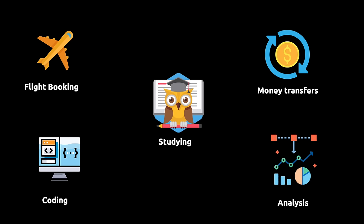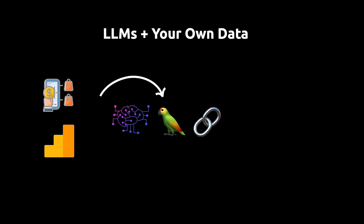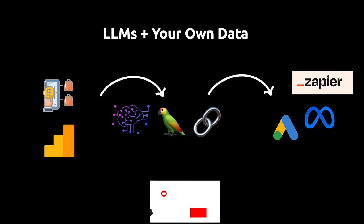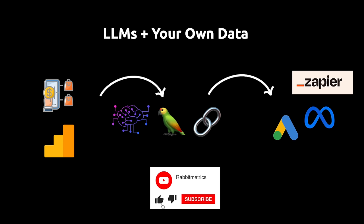Coding, data analysis, data science — it's all going to be affected by this. One of the applications I'm most excited about is the ability to connect large language models to existing company data such as customer data, marketing data, and so on. I think we're going to see exponential progress in data analytics and data science. Our ability to connect large language models to advanced APIs such as Meta's API or Google's API is really going to make things take off.